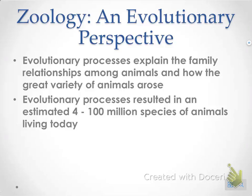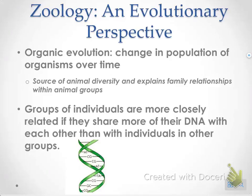From an evolutionary perspective, the evolutionary process explains these relationships — how are different animals related and how is there such a variety of animals? Evolution resulted in what is believed to be 4 to 100 million different species of animals living today, due to an evolutionary process.